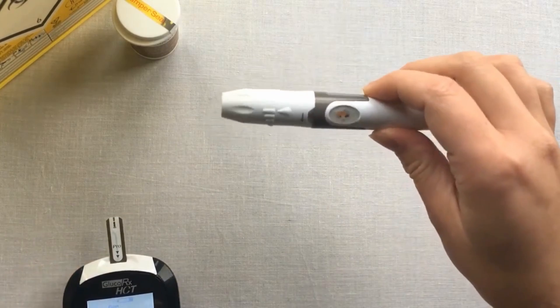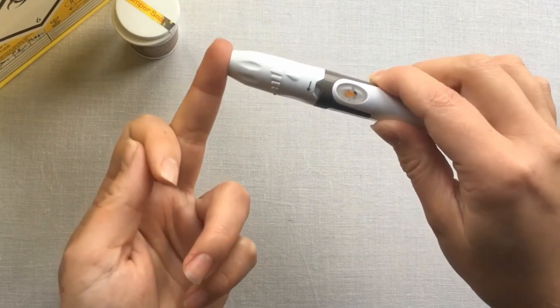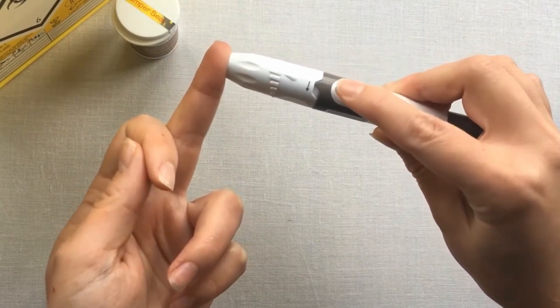Take your preset lancing device and hold it firmly against the puncture site. Apply pressure to the orange trigger button.